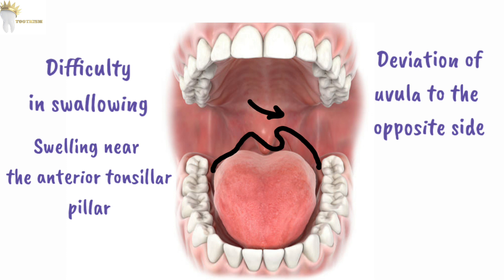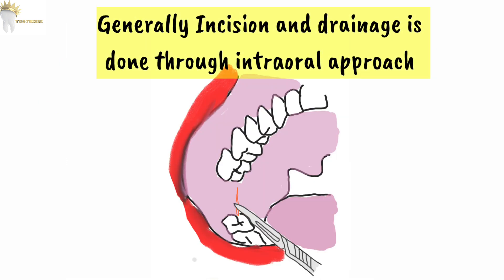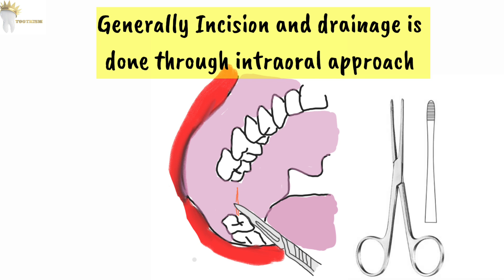Note that there will be no obvious swelling extraorally. Generally, incision and drainage are done through an intraoral approach, but if there is significant trismus, an extraoral approach is indicated. In the intraoral approach, a vertical incision of 1.5 cm is made at the anterior and medial aspect of the mandible. Sinus forceps is inserted into the abscess cavity and pus is evacuated.